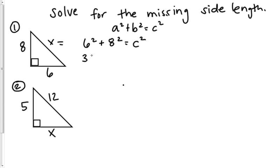6 squared is 36 plus 64, which is what 8 squared is. That is equal to c squared. 36 plus 64 is equal to 100. That is equal to c squared.